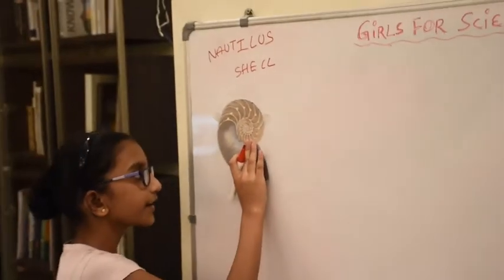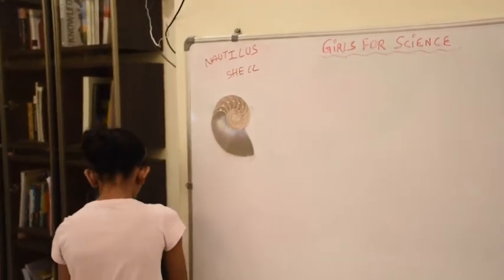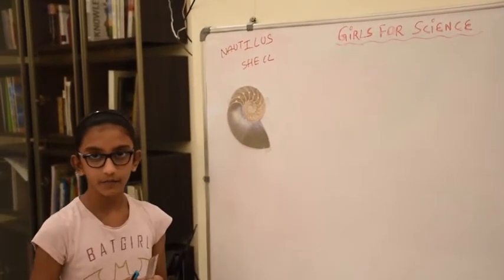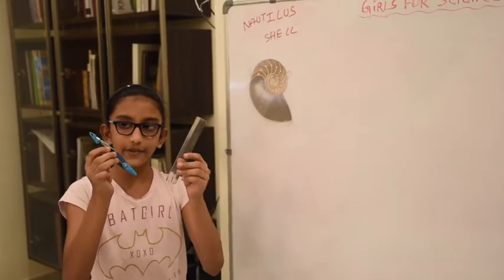We are going to measure the shell. All you will be needing to measure the shell is these two items, a divider and a ruler.